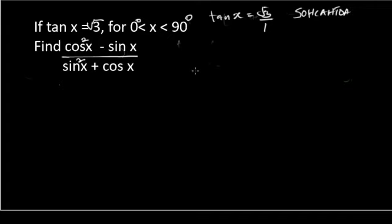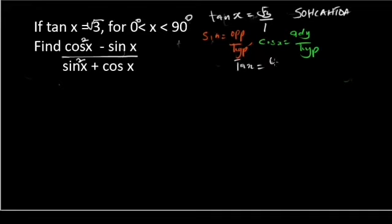SOHCAHTOA says that the value of my sin x will be equals to opposite over hypotenuse. Also, my cos x will be equals to adjacent over hypotenuse. And finally SOHCAHTOA says that my tan x will be equals to opposite over adjacent.